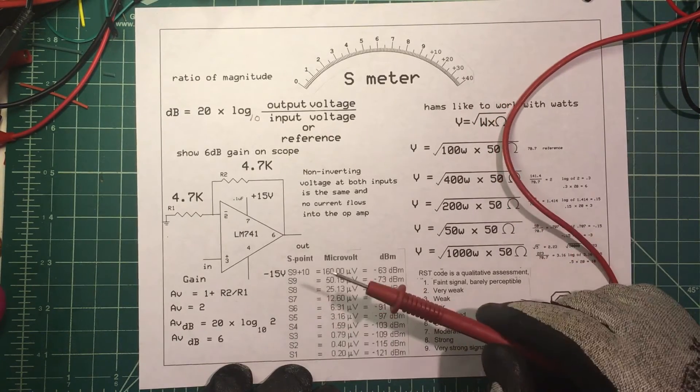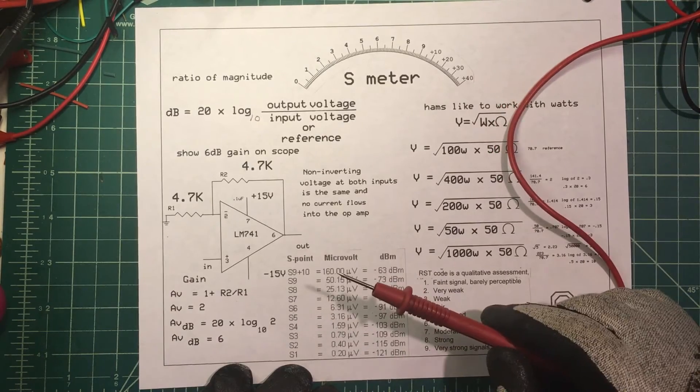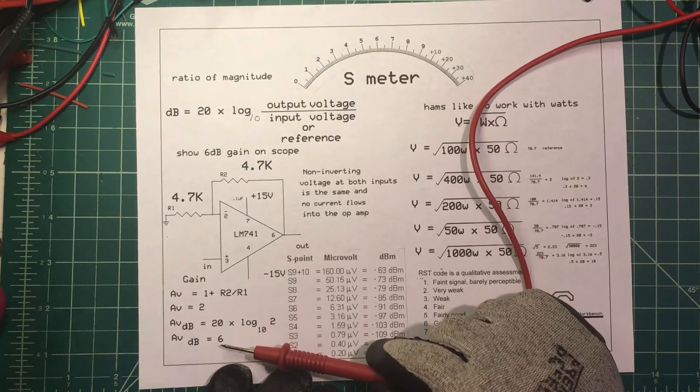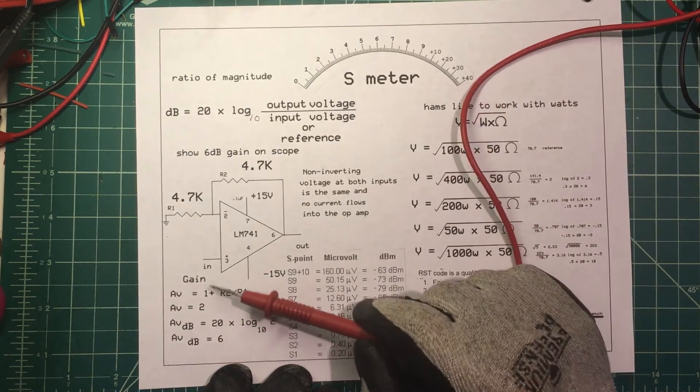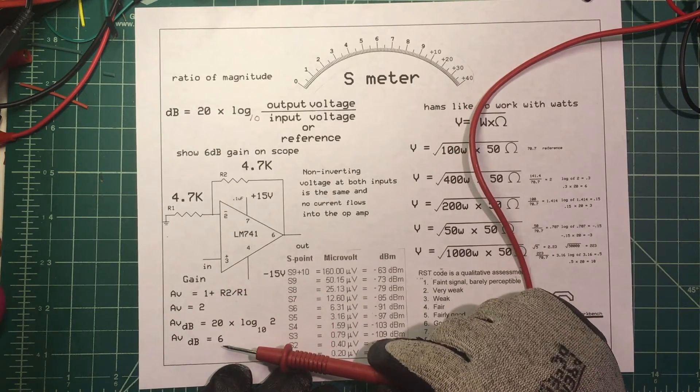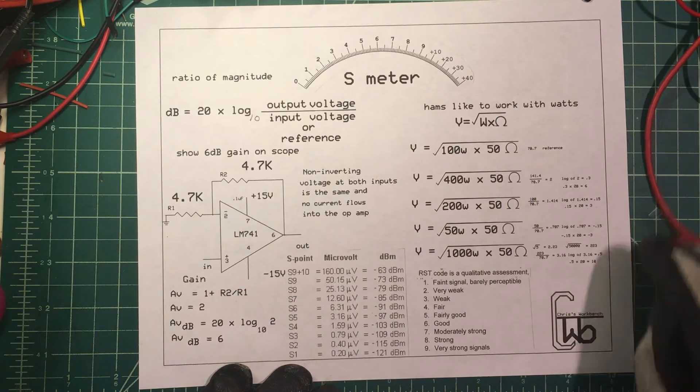Now for dB, you take 20 times log base 10 of 2. Log base 10 of 2 is 0.3, because 10 raised to the power of 0.3 is 2 - that's how you check a log. And 0.3 times 20 is 6, so 6 dB. If we have a gain of 2, we're up 6 dB.